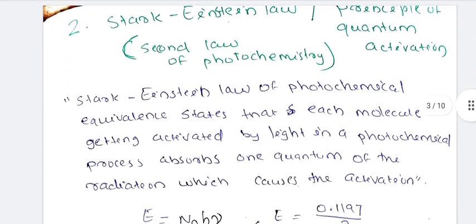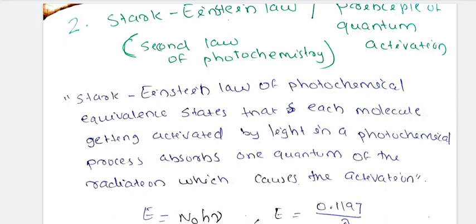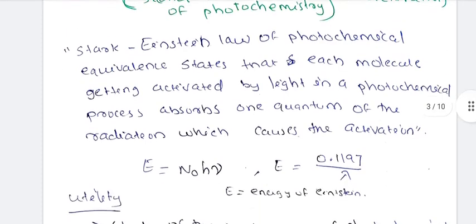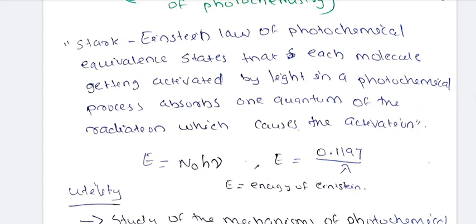Next is the Stark-Einstein Law, the second law of photochemistry, also called the principle of quantum activation. The Stark-Einstein Law states that each molecule getting activated by light in a photochemical process absorbs one quantum of radiation which causes the activation. This is the primary process.